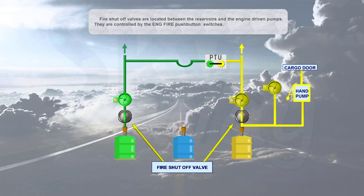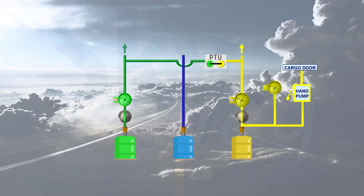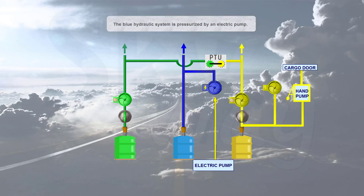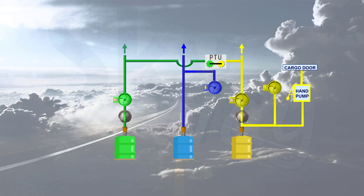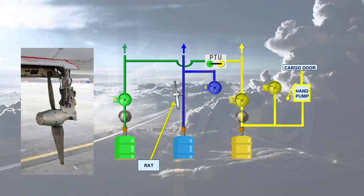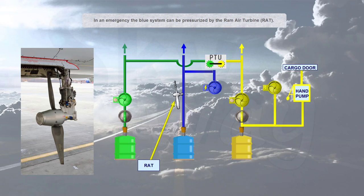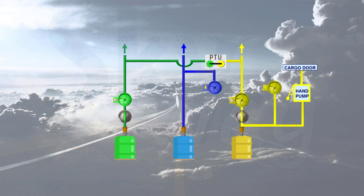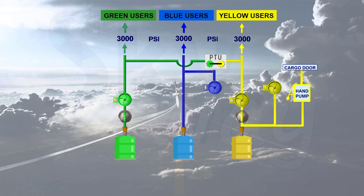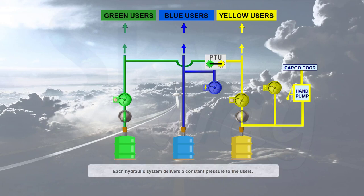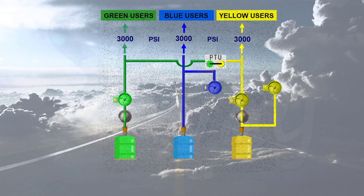The blue hydraulic system is pressurized by an electric pump. In an emergency, the blue system can be pressurized by the RAM Air Turbine (RAT). Each hydraulic system delivers a constant pressure to the users.